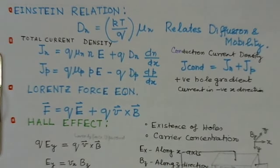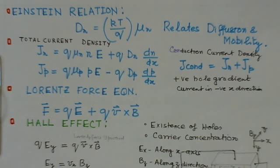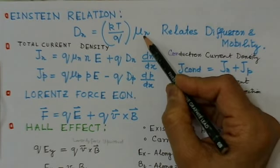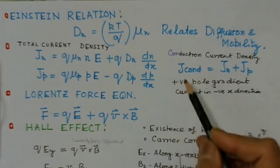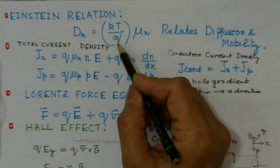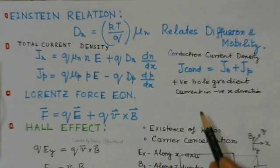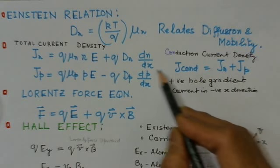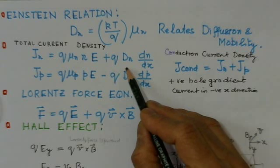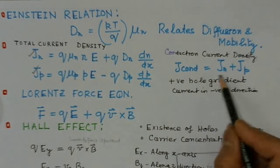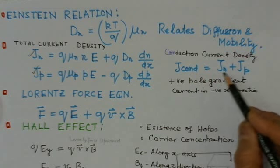A very important relation is Einstein's relation, which relates mobility μn and diffusivity Dn: Dn = (kT/q)·μn. When current is carried by both drift due to electric field and diffusion due to concentration gradient, the total current density is Jn + Jp, combining both drift and diffusion components for electrons and holes.